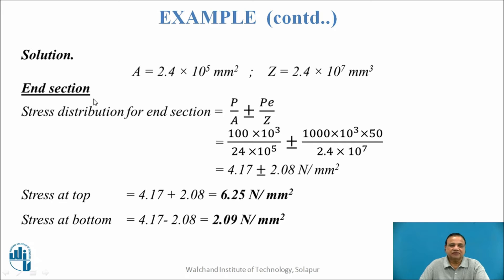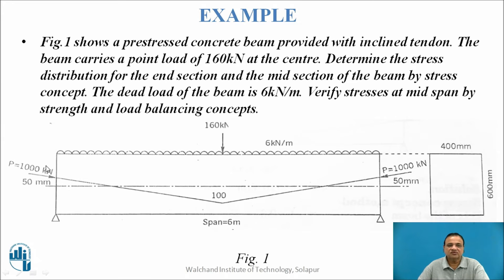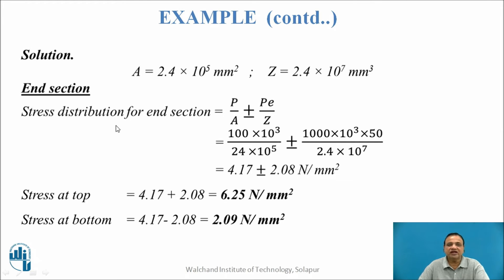For the end section, if we transfer the pre-stressing force to the neutral axis, it is 1000 kN acting at the neutral axis, plus a bending moment P×e = 1000 × 50 mm. This bending moment causes bending compression at the top and bending tension at the bottom.